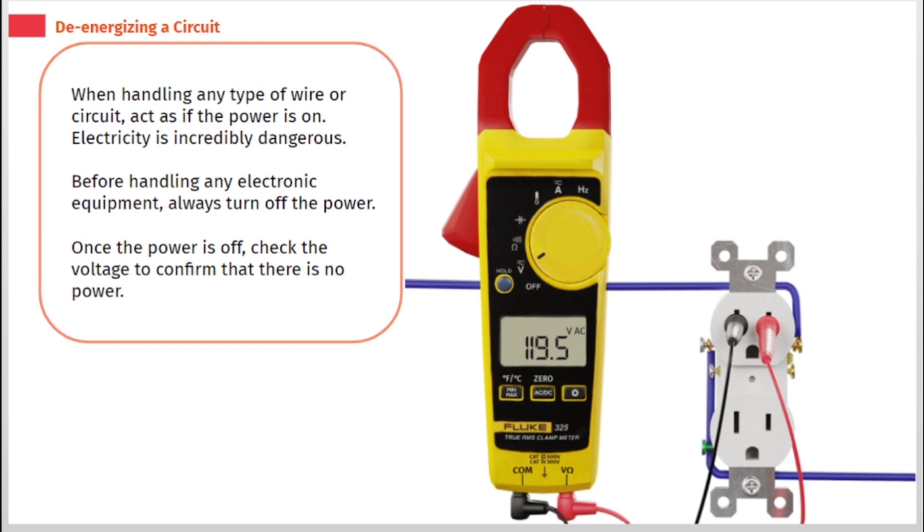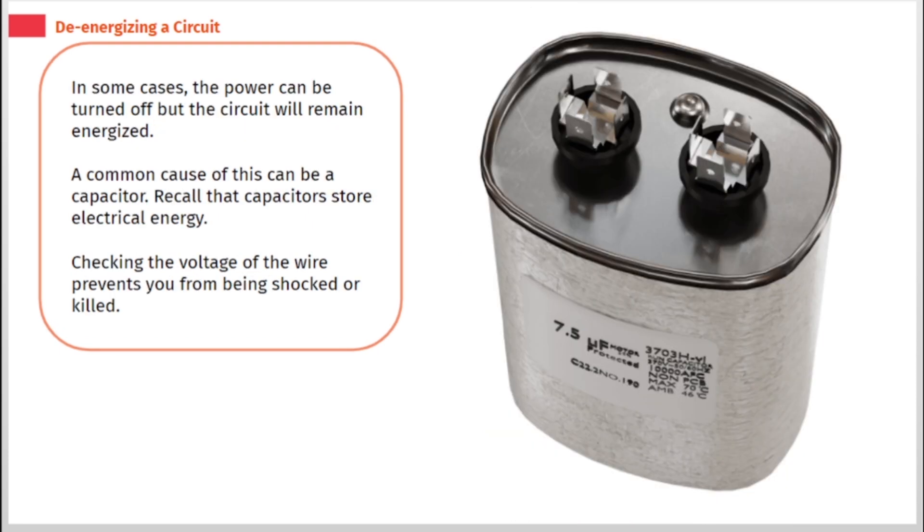Once the power is off, check the voltage to confirm that there is no power. In some cases, the power can be turned off but the circuit will remain energized. A common cause of this can be a capacitor. Recall that capacitors store electrical energy. Checking the voltage of the wire prevents you from being shocked or killed.